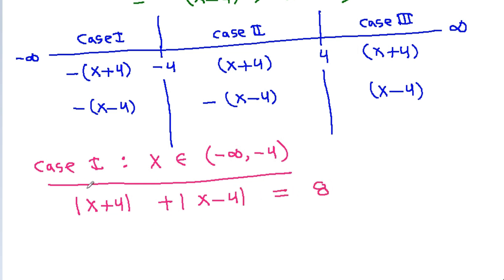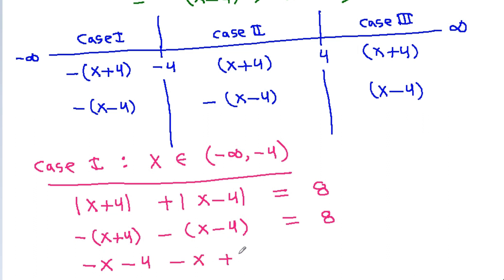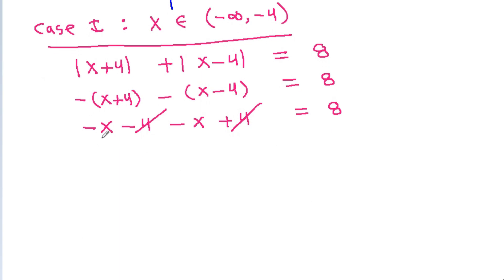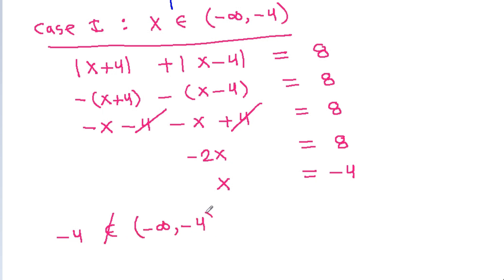And |x-4| is -(x-4), which equals 8. So we get -(x+4) - (x-4) = 8, and the 4s get cancelled. So -x - x is -2x = 8, giving x = -4. But -4 does not belong in the open interval (-infinity, -4), so this case has no solution.